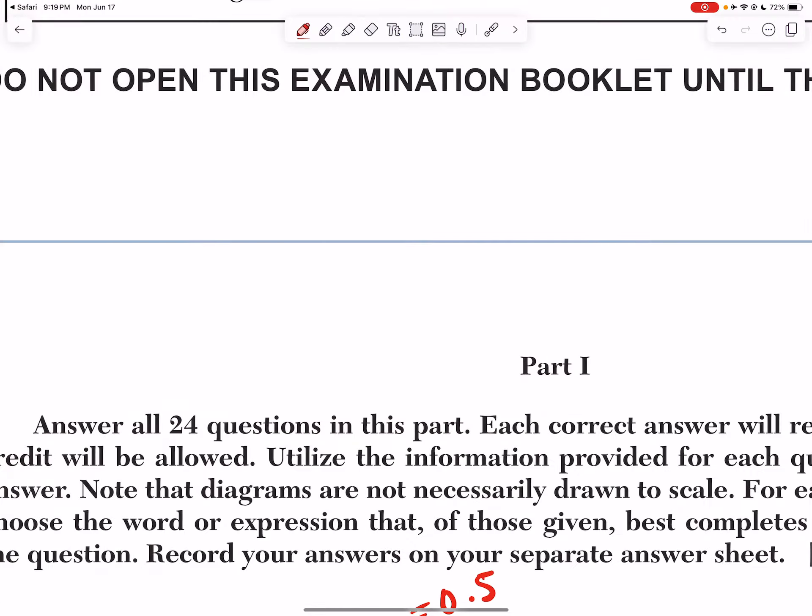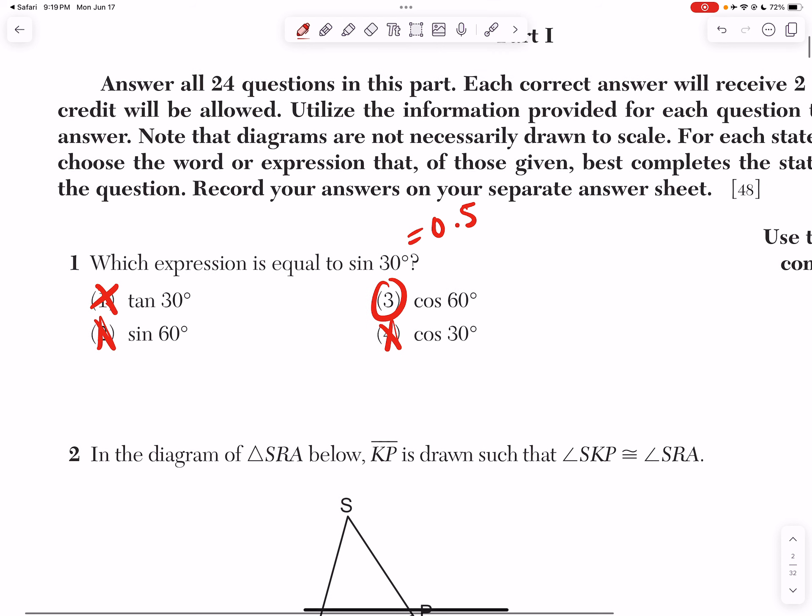Now another way you can do this problem is if you remember way back when, you know that sine of A and cosine of B are equal when the angles add up to 90.